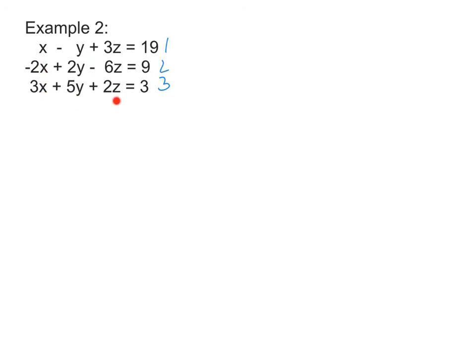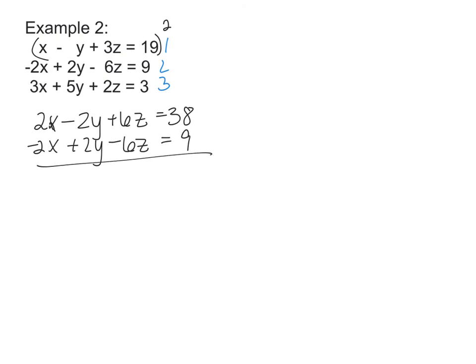Y could be used. Z will be a little bit harder, but I could use 1 and 2 and eliminate the z, and then I could use 2 and 3 as well. Since we eliminated z last time, let's do y. So I'm going to multiply the top equation by 2. So I get 2x - 2y + 6z = 38. And equation 2 is -2x + 2y - 6z = 9. When I add these all together, my x's cancel, my y's cancel, and my z's cancel, and I end up with 0 = 47.